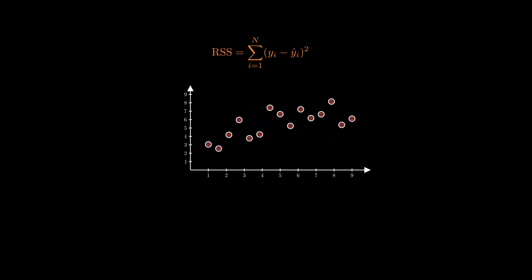Imagine plotting all your data points and then drawing a straight line through them, the best fit line, described by the equation of linear regression. Now take the vertical distance from each point to the line, square those distances, and add them up. That total is called the Residual Sum of Squares or RSS.